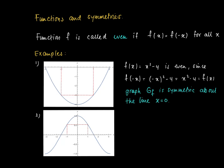As a second example, we have the function f(x) = cos(x). This is also an even function. This can be seen from the graph since we have a unique line of symmetry which is the line x = 0.